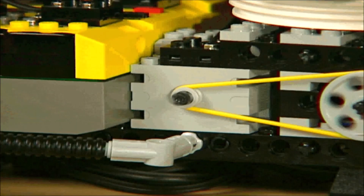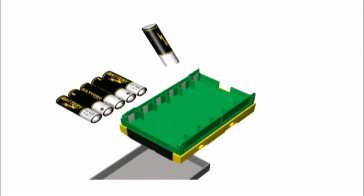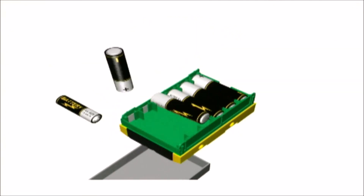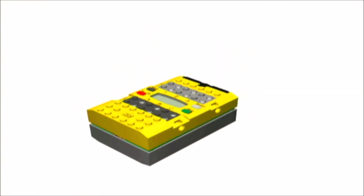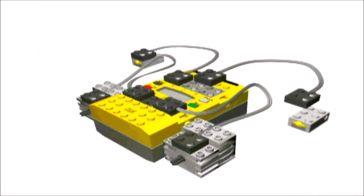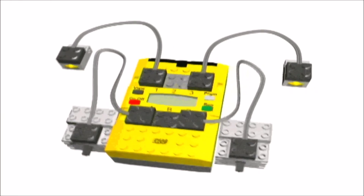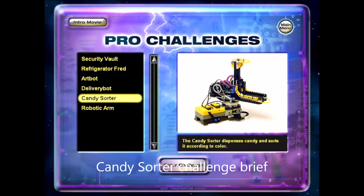The Robotics Invention System has over 700 LEGO pieces, including sensors, motors, gears, and more. Use pieces from your other sets too. The system features the RCX, a LEGO micro-computer that acts as the brain of your inventions. The RCX takes input from sensors, then it activates motors to drive the robot.